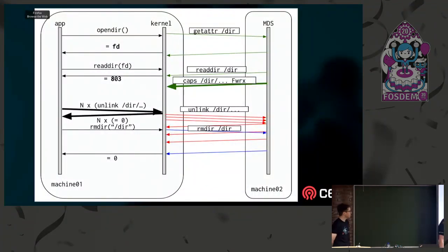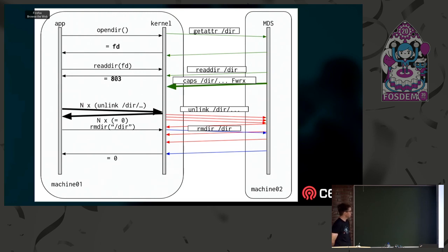Here's the updated diagram: it's pretty much the same at the top, but now we're firing off lots of async unlink requests in parallel, and they come back. Once all the replies have come in, we can go ahead and issue the rmdir request to remove the directory.